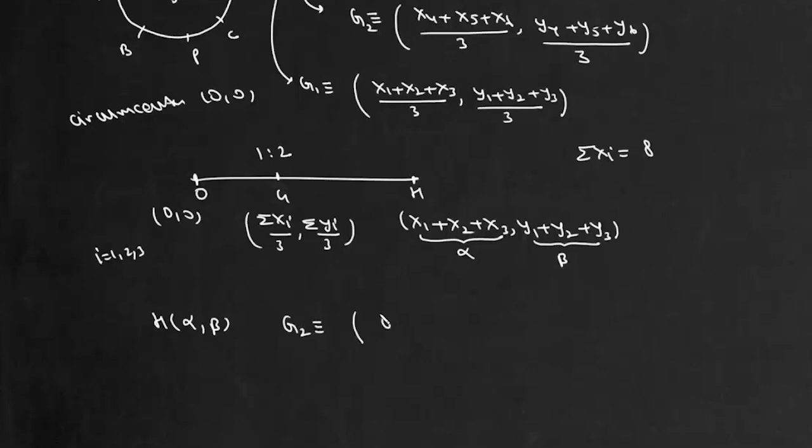it will be 8 minus alpha by 3 and in the same way summation yi, it is given as 4. So y4 plus y5 plus y6 will be 4 minus beta upon 3.